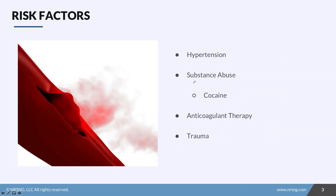The risk factors for hemorrhagic strokes: hypertension is a huge one, as well as substance abuse, specifically cocaine. A lot of times you'll see patients come in who have a history of cocaine abuse, and that is what has caused the hemorrhagic stroke, because both of these weaken the vessel walls until they actually just burst.